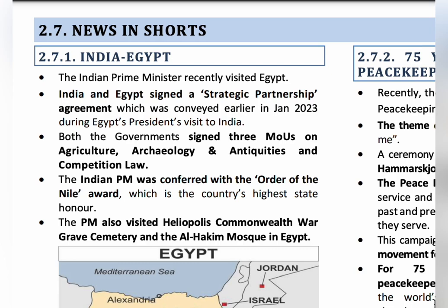The next topic is India-Egypt relations. On 25th June, our Prime Minister visited Egypt and signed a Strategic Partnership Agreement. The agreement covers four elements: political defense and security; economic engagement; scientific and academic collaboration; and cultural and people-to-people contacts. India has good historical relations with Egypt — Egypt helped India conquer Goa from Portugal under Operation Vijay by stopping Portuguese military ships at the Suez Canal.